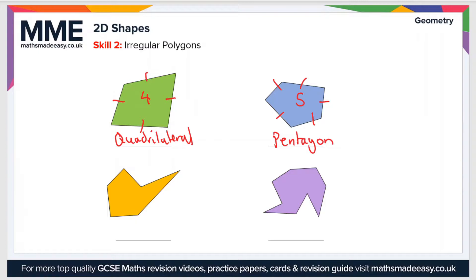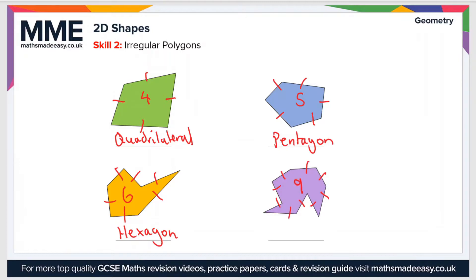In the shape in the bottom left, we have one, two, three, four, five, six sides, so this is an irregular hexagon. And finally, the shape in the bottom right has one, two, three, four, five, six, seven, eight, nine sides, so this is an irregular nonagon.